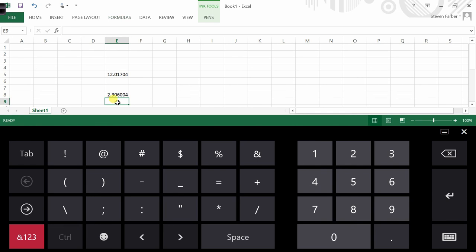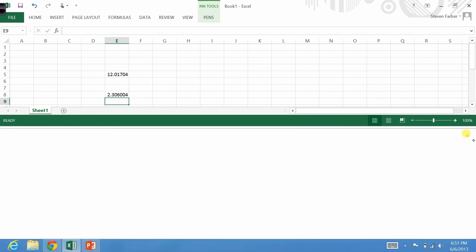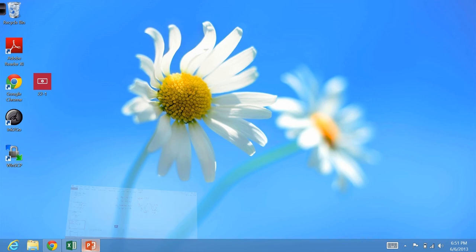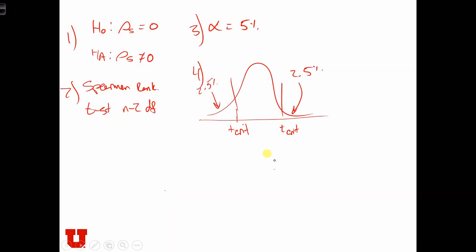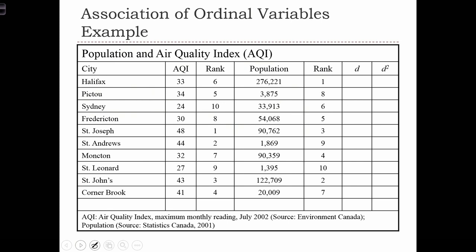So the critical value is 2.3 and minus 2.3. Step 5 is to actually compute this statistic. To do that, we're going to use our table of values. The first thing that we need to do is compute our differences between the two ranks. We're going to take the rank of AQI and subtract the rank of population.